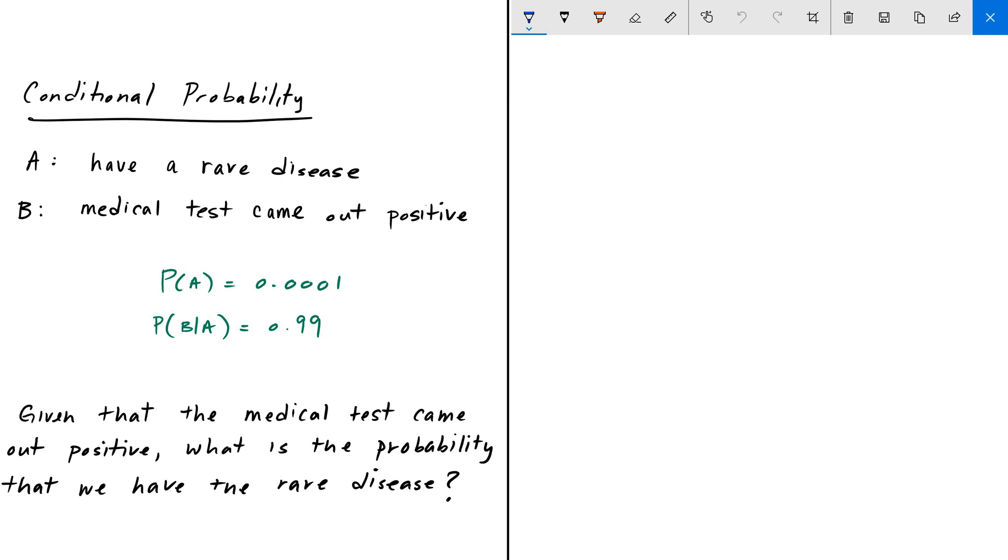Here we are told, here in green, that the probability of having a rare disease is equal to 0.0001, and the probability that we have a medical test that came out positive, knowing that we have a rare disease, is 99%. As always, pause the video, give it a shot, and we'll go over the answer in a bit.